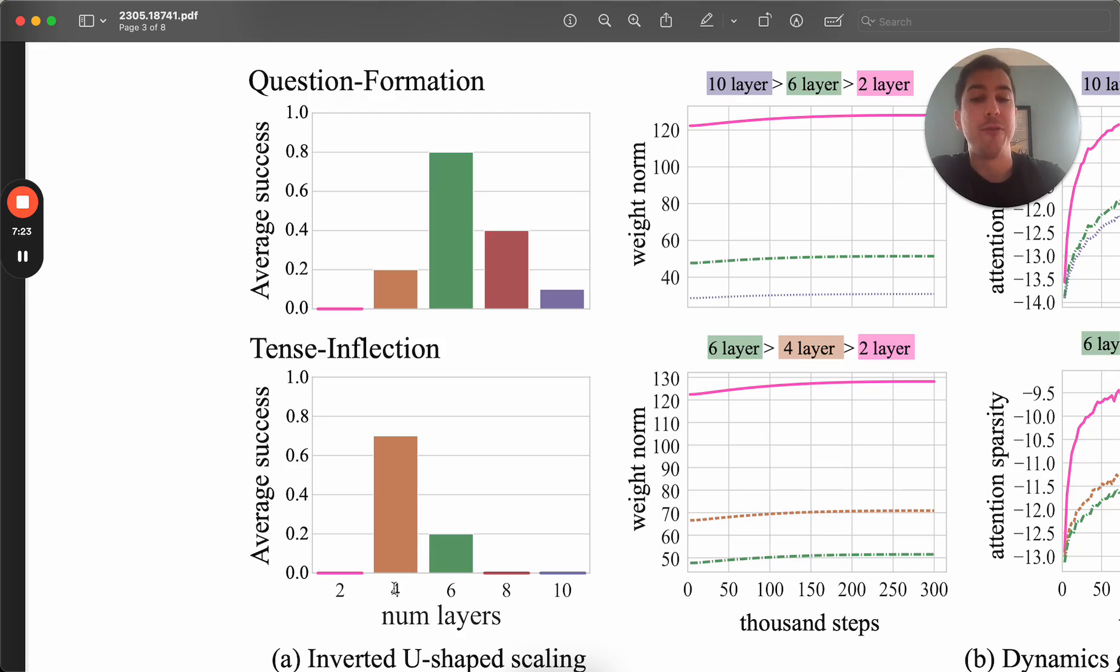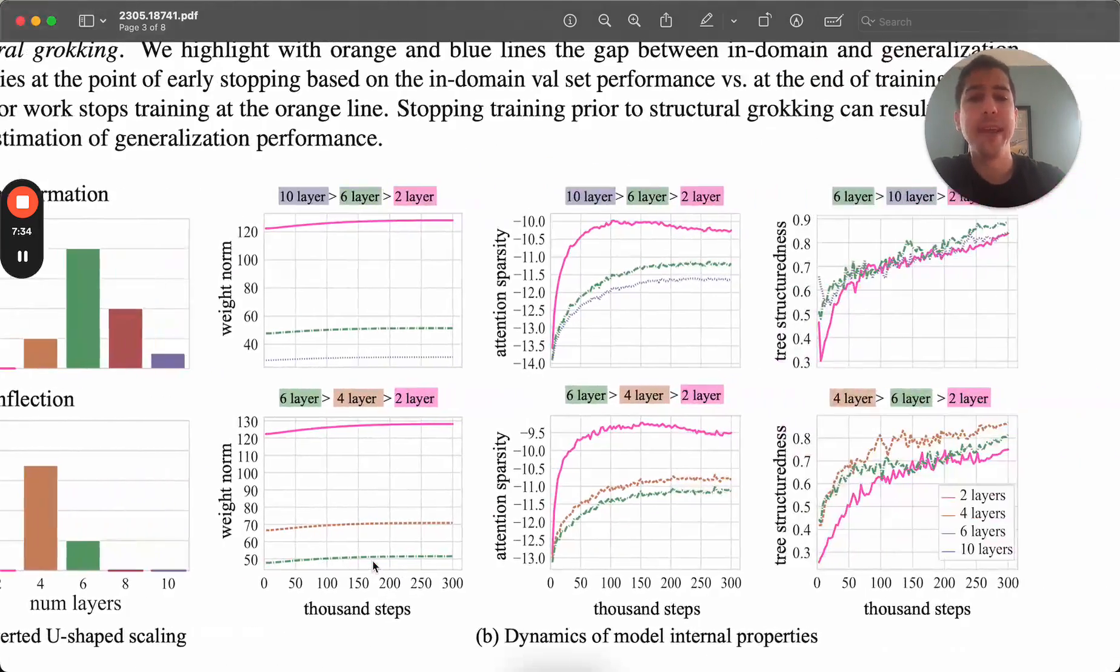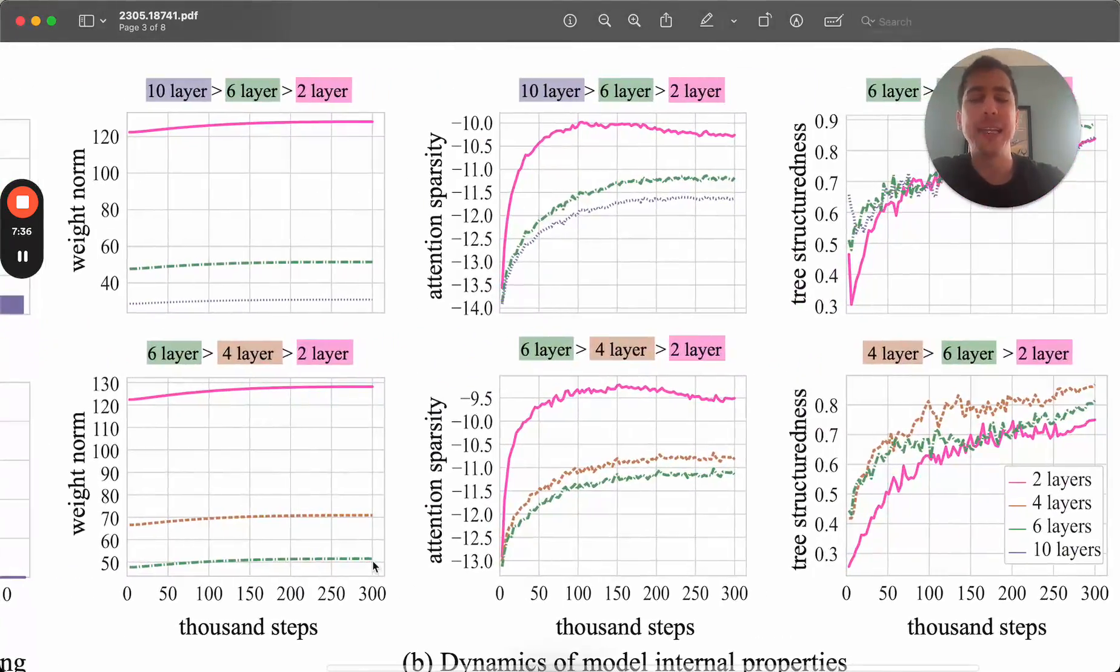And so what they find is, depending on the data set, somewhere around four, six, or even eight layers, you will reach this grokking state. And they have here, they ask this question of, when can we know or expect that grokking will happen? Let's say you have a data set that you're training on, and you want to test to say, should I keep training this? My validation accuracy says that I've maxed out the results.